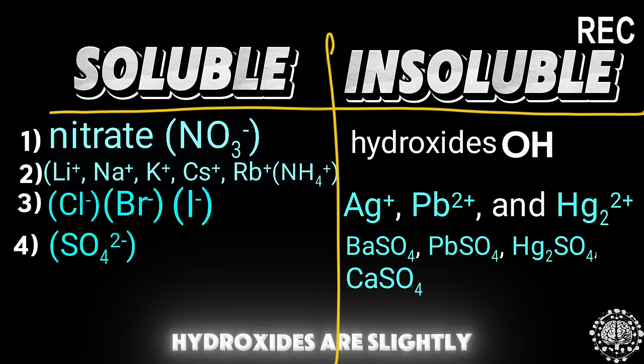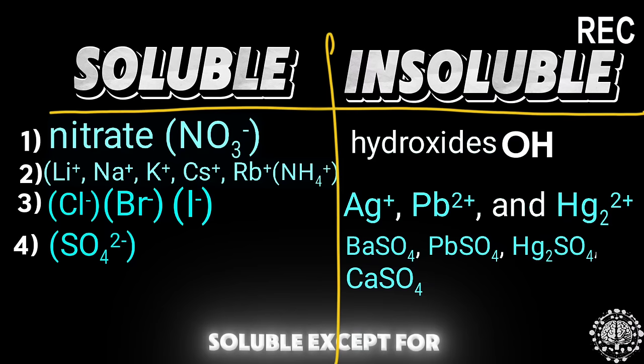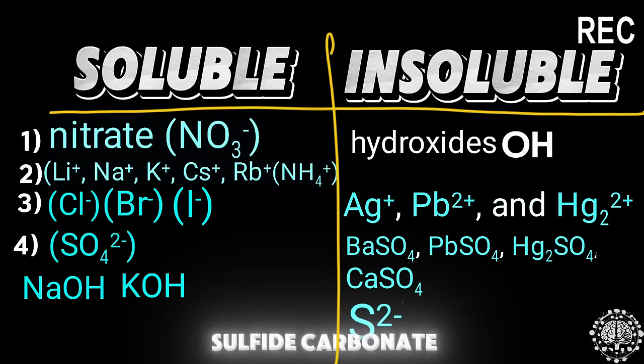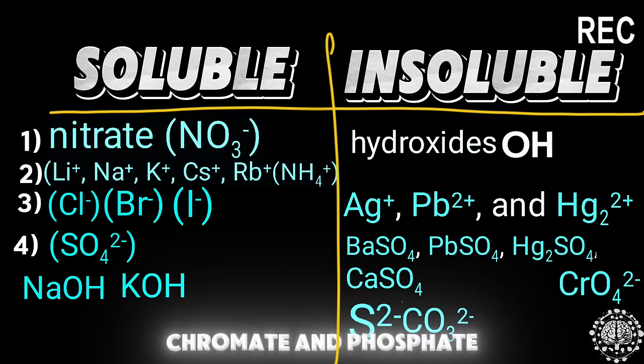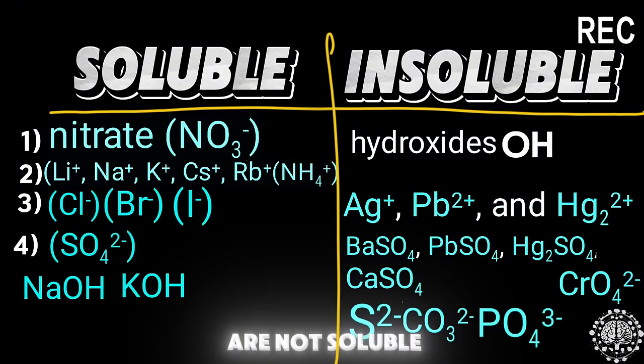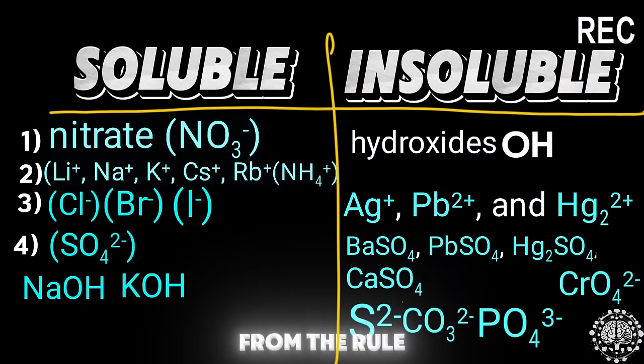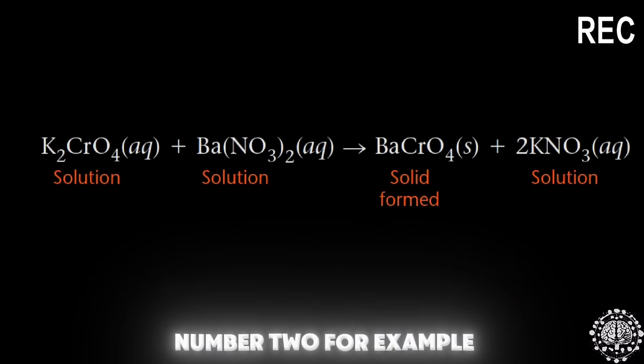Hydroxides are slightly soluble except for NaOH and KOH. And last but not least, the sulfide, carbonate, chromate, and phosphate are not soluble except the ones which contain the cations in rule number two.